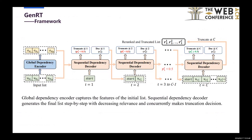Genet integrates reranking and truncation via a generative paradigm based on an encoder-decoder architecture. A global dependency encoder captures the features of the initial list. A sequential dependency decoder generates the final list step-by-step with decreasing relevance, and concurrently makes truncation decisions.